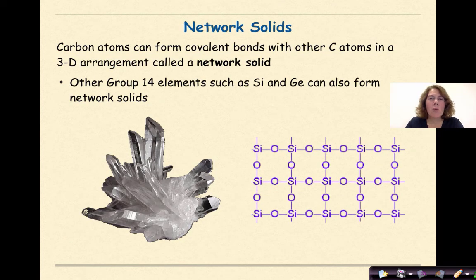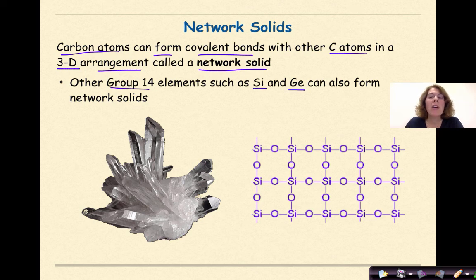Then we have network solids. These are carbon atoms that can form covalent bonds with other carbon atoms in a three-dimensional arrangement which we call a network solid. Other group 14 elements such as silicon and germanium can also form network solids.